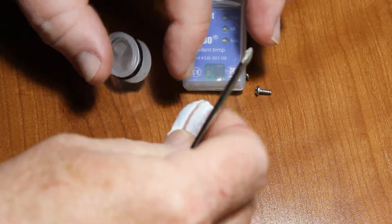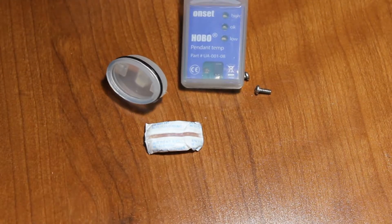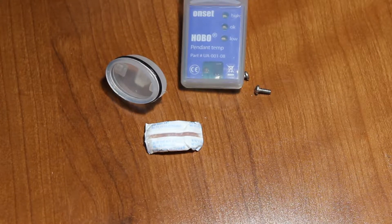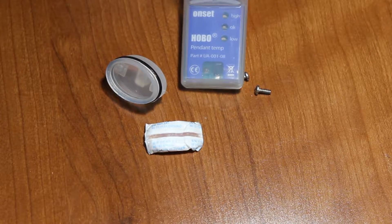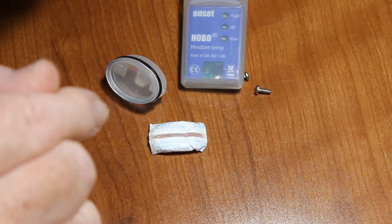This is a desiccant pack. You notice this one is pink. Desiccant packs will pick up moisture from the air. If you're in a humid environment, they'll turn pink very quickly.